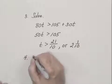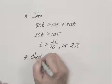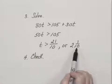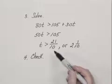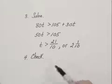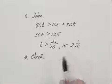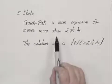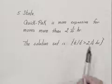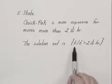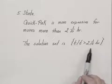The fourth step is to check our answer. We pick a time greater than 2 and 1 tenth, like 3 hours, and find how much Quick Pack and Mitchell would each charge — we find that Quick Pack would indeed be more expensive when t equals 3. So we state our answer: Quick Pack is more expensive for moves lasting more than 2 and 1 tenth hours. Written as a solution set, it is the set of all t such that t is greater than 2 and 1 tenth hours.